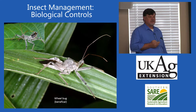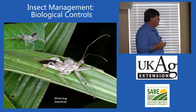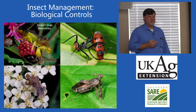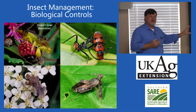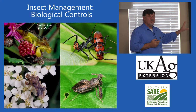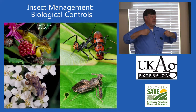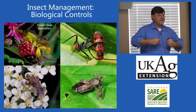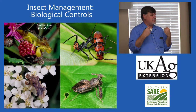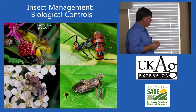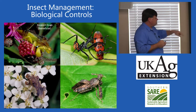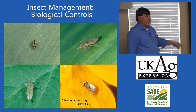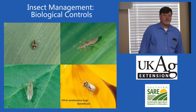Assassin bugs — we have the big showy wheel bug, but we also have other species. One way to recognize assassin bugs is that they have enlarged front legs. A lot of insect predators have big strong legs in front so that when they grab something they can overpower it and it can't get away — just like the praying mantis.